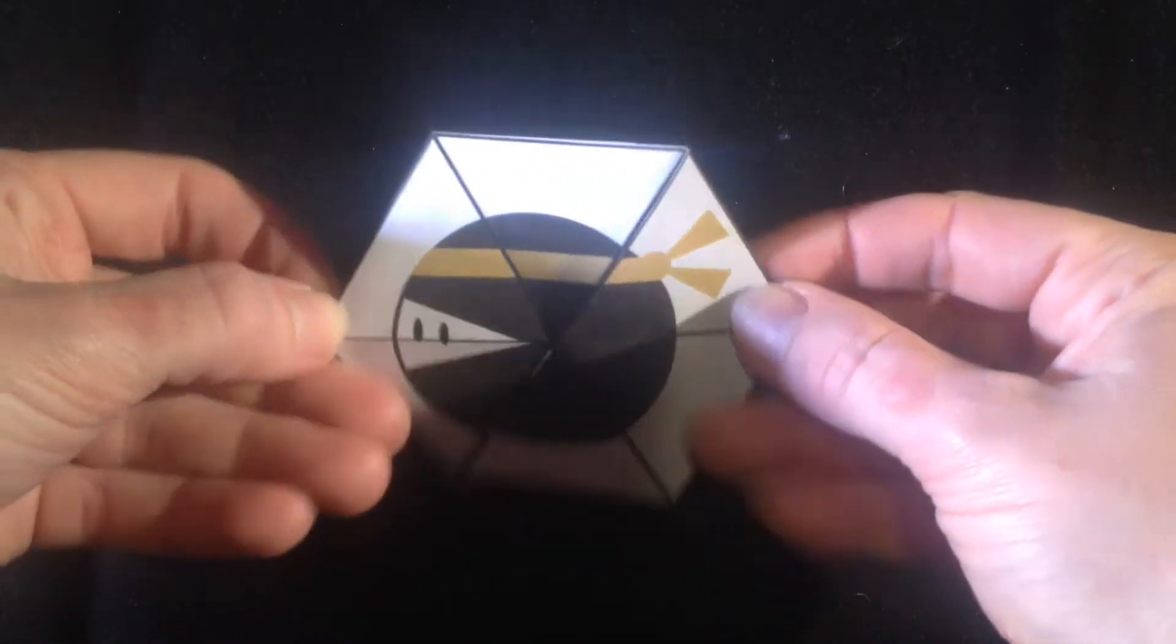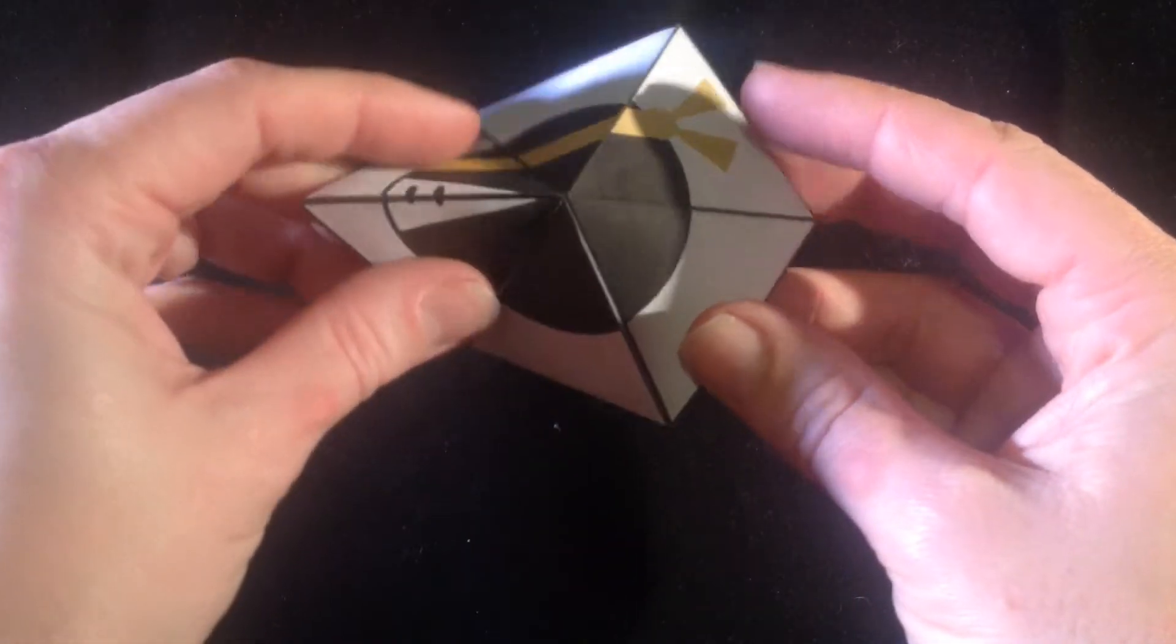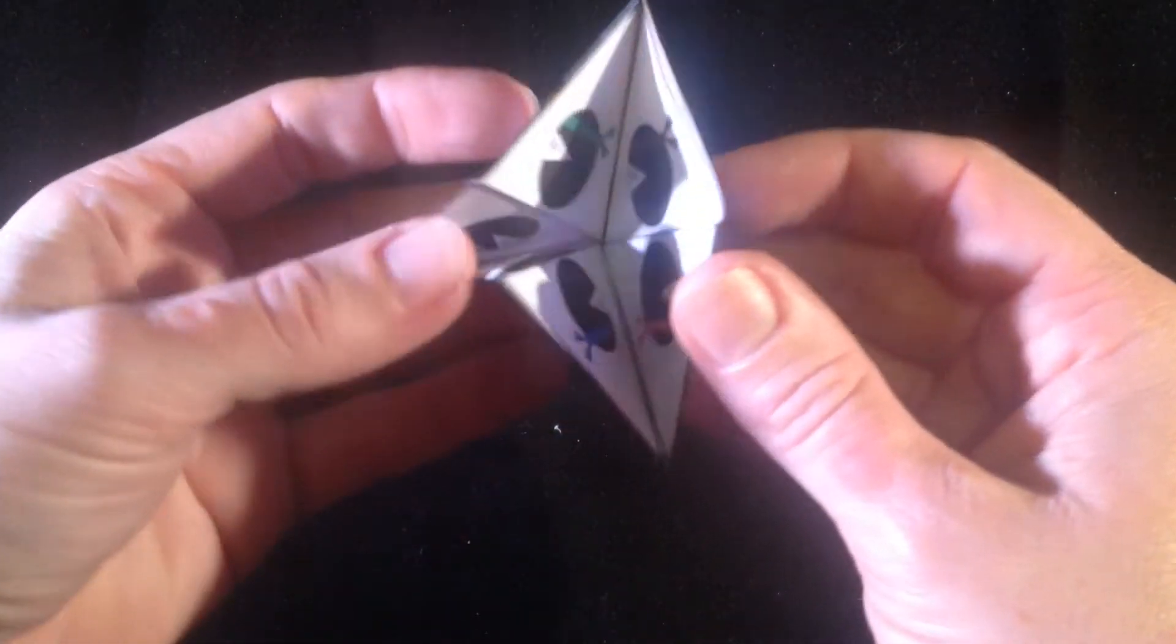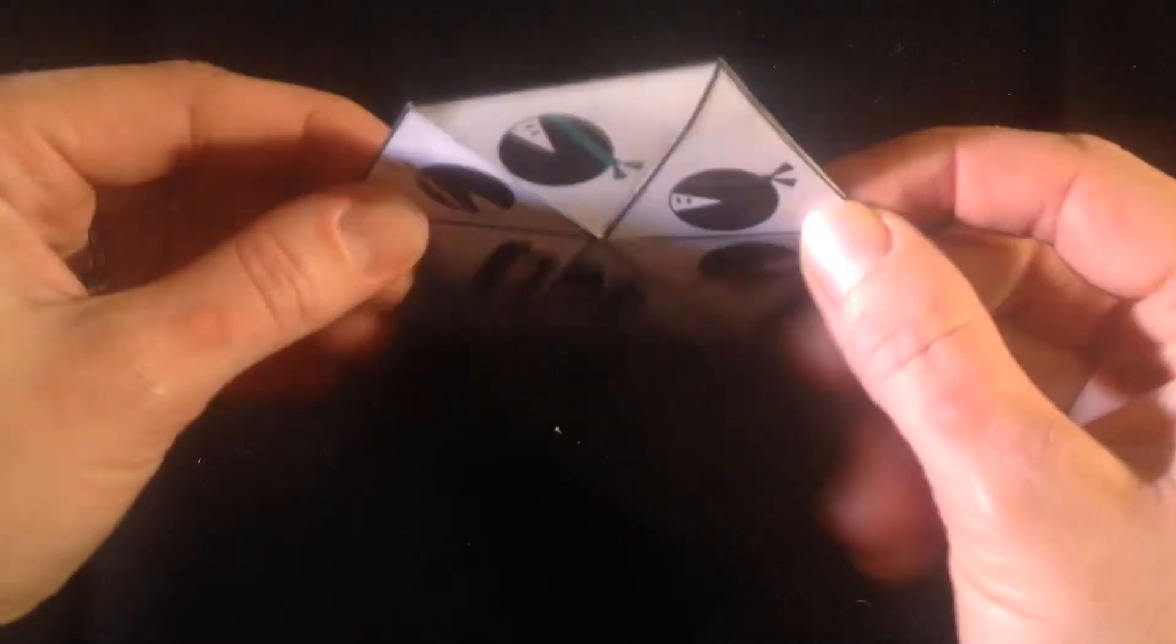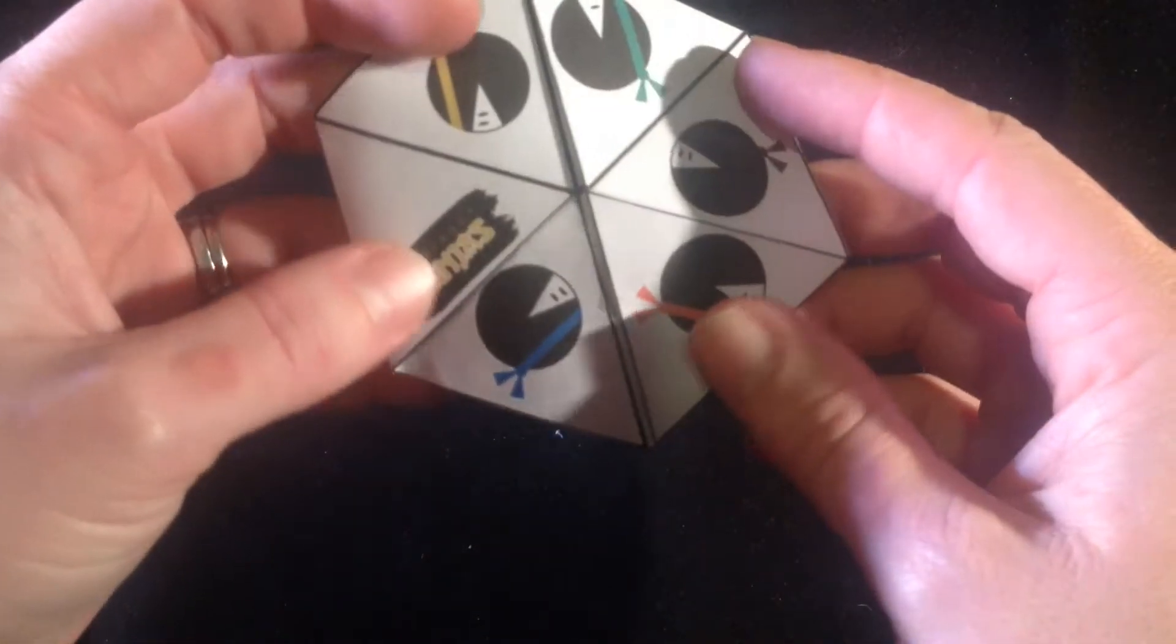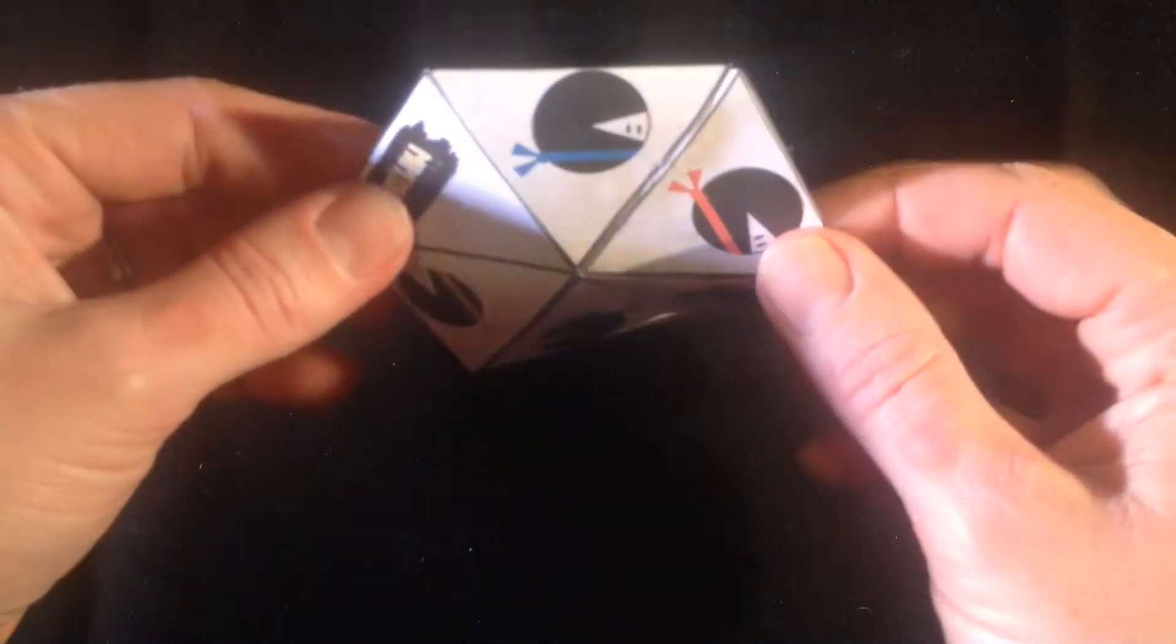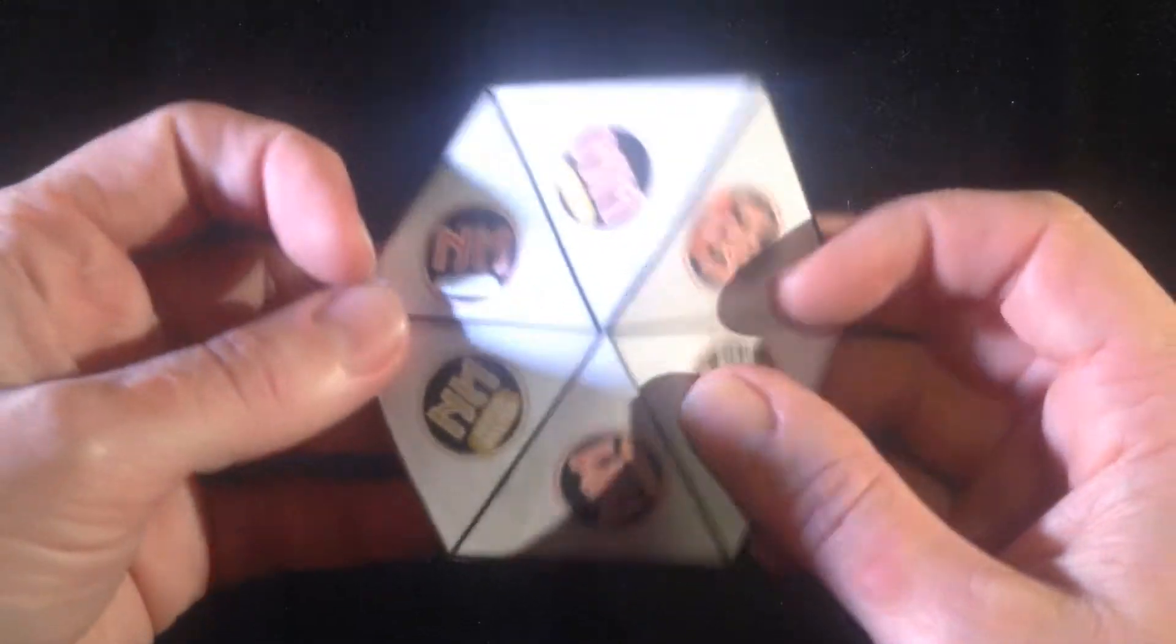Hi, it's Jo here from Numeracy Ninjas. Check out the new Numeracy Ninjas Trihexaflexigone. A hexaflexigone is a hexagon, but the amazing thing about it is it has three faces. When you fold and flex your hexaflexigone it will reveal a third hidden face that previously you couldn't see.